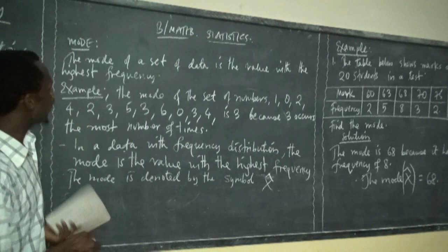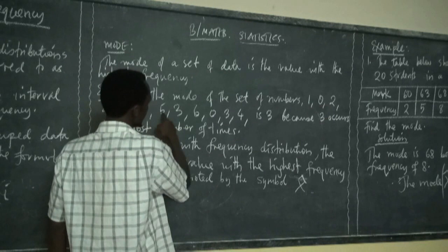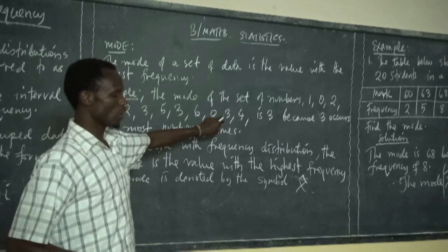For example, if you have been given this list of numbers, find the mode of the set of numbers. You have: 1, 0, 2, 4, 2, 3, 5, 3, 6, 0, 3, 4. So the mode is 3.